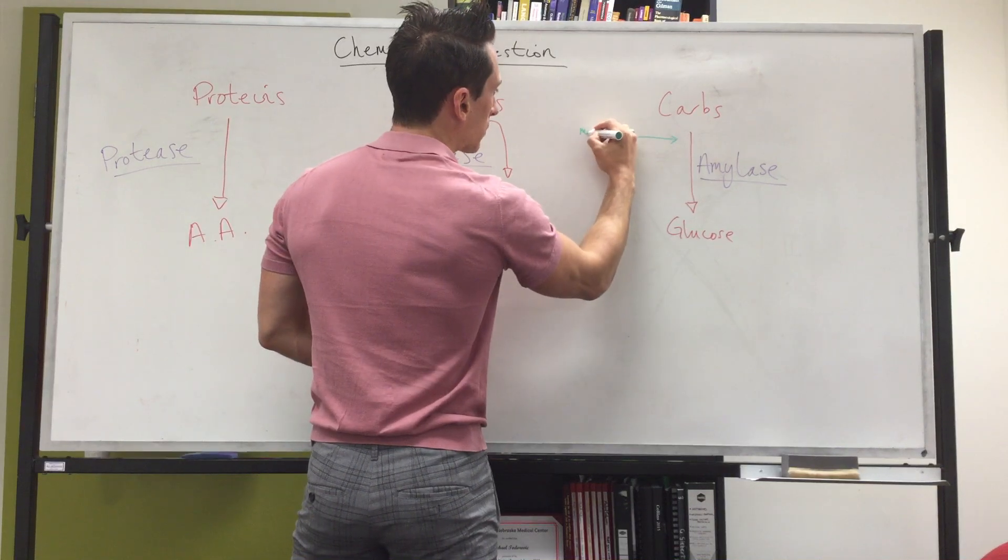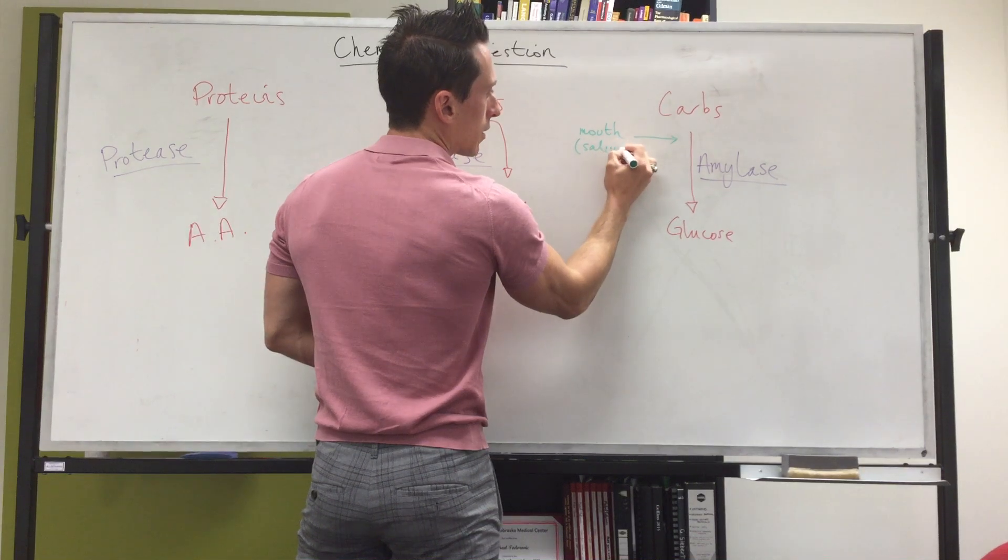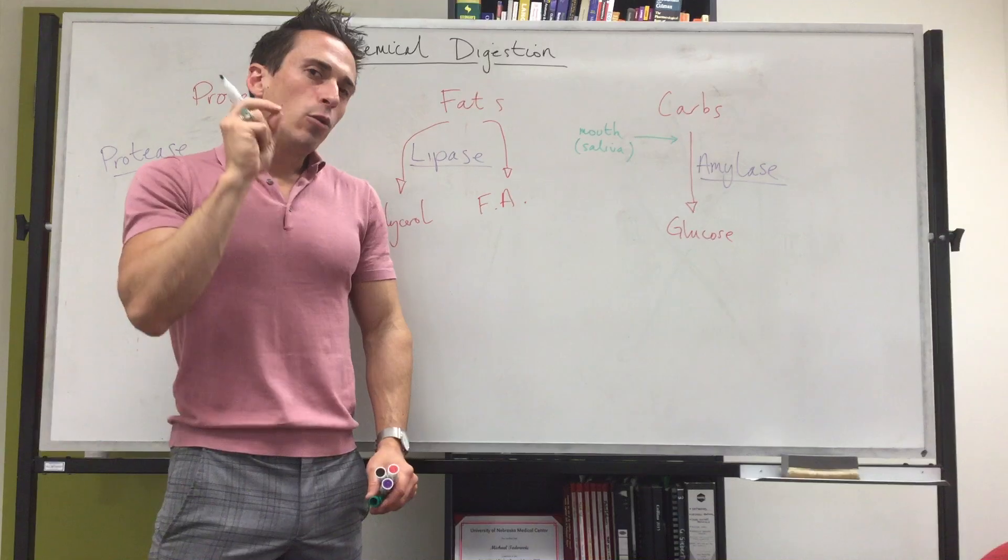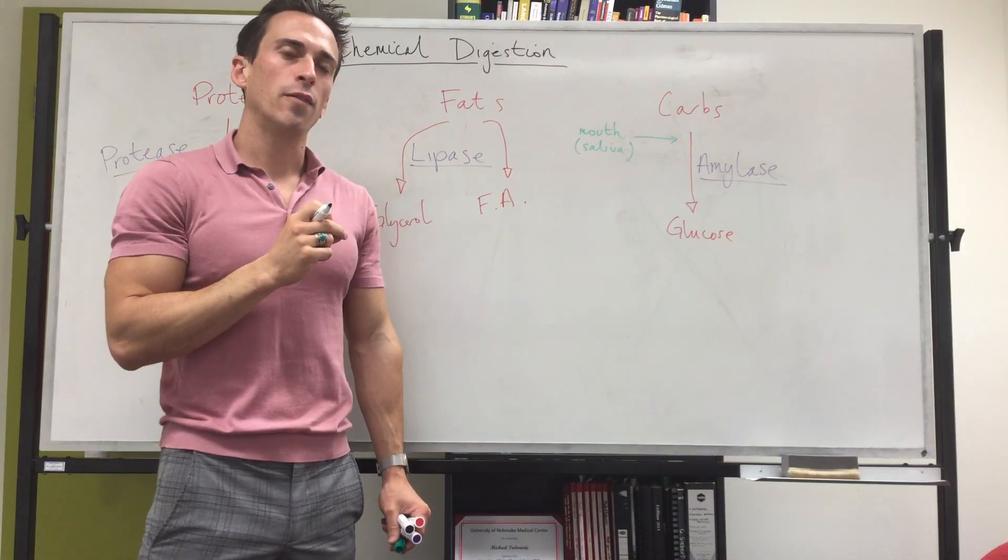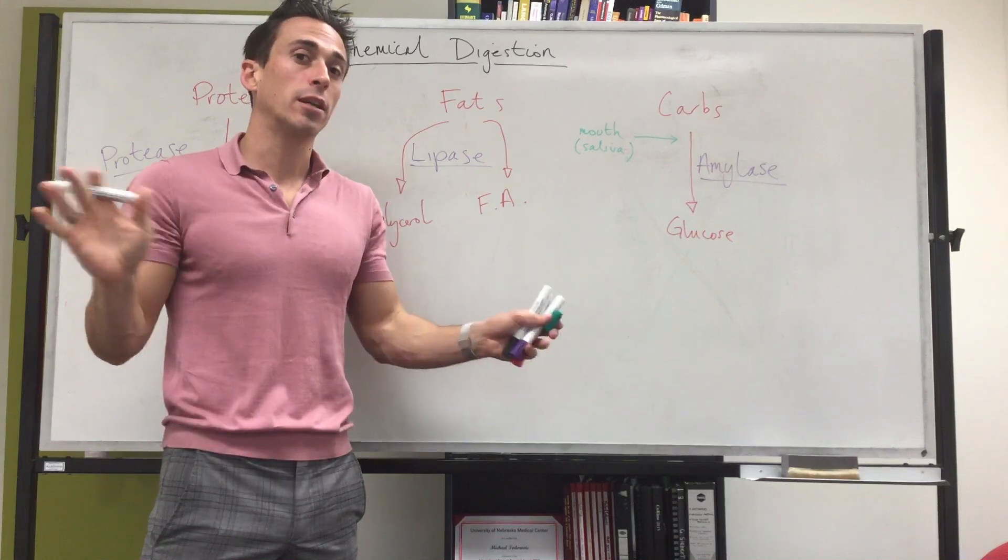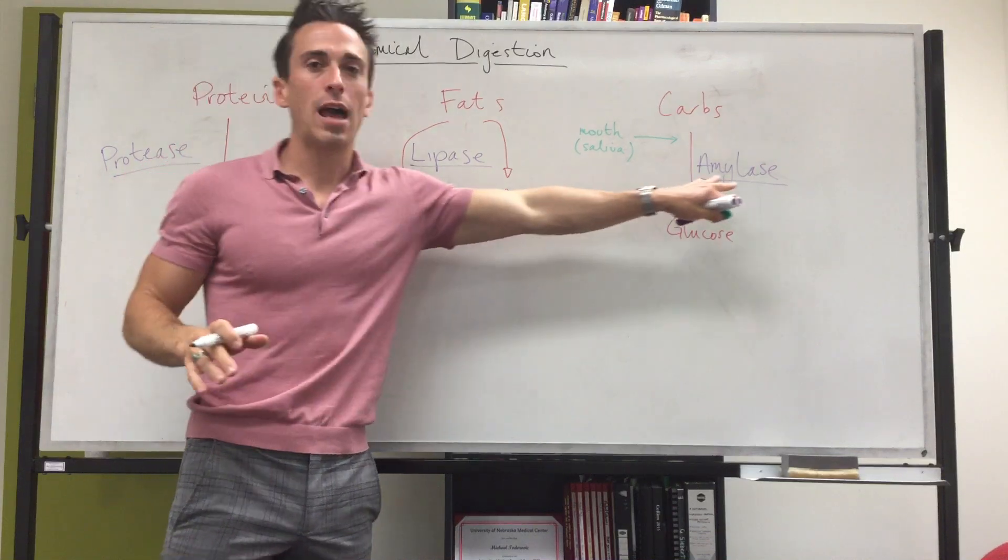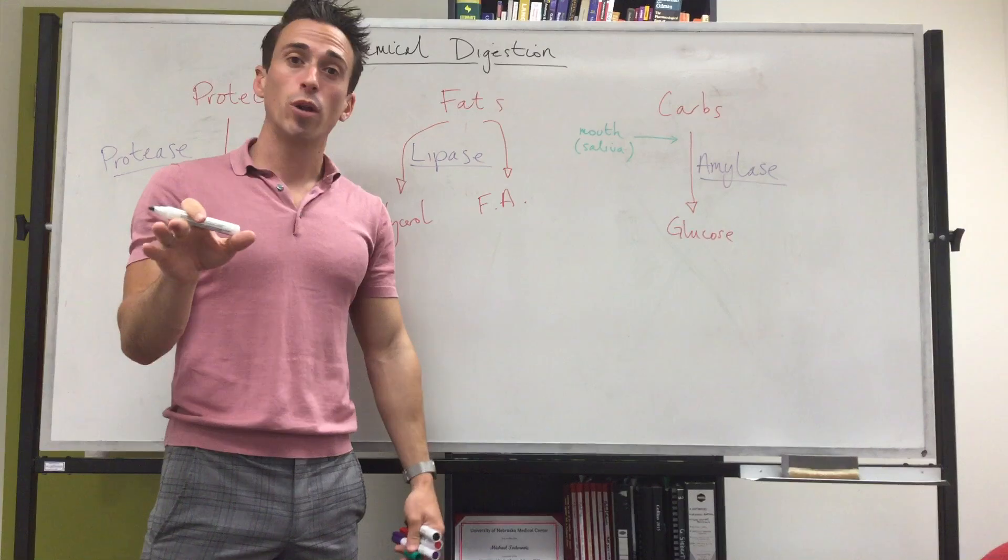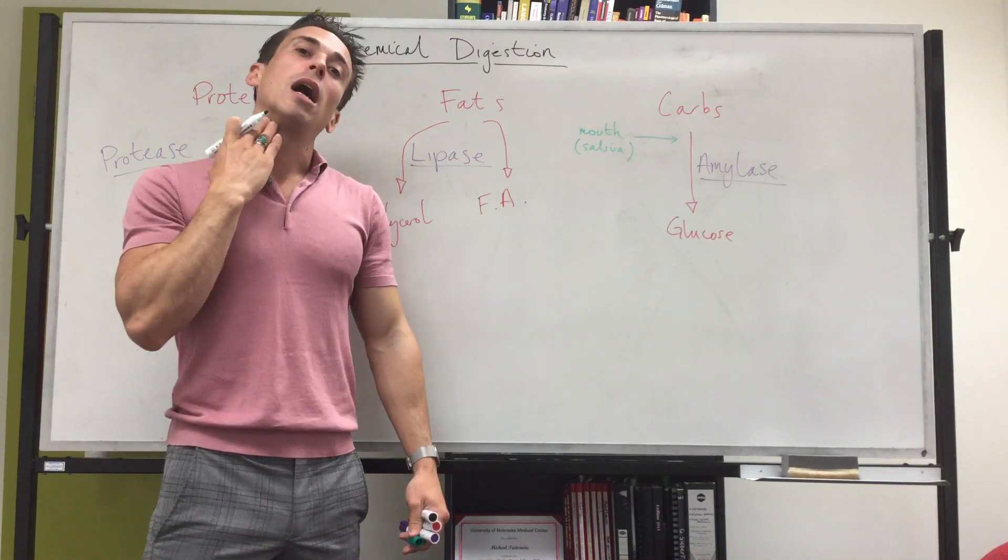So mouth by releasing saliva with amylase. Now there's a little bit of lipase that's being released in the saliva, but we're going to say at the moment it's negligible. Then as we go into the esophagus, there's no chemical digestion occurring—it's simply a conduit between the mouth and the stomach.